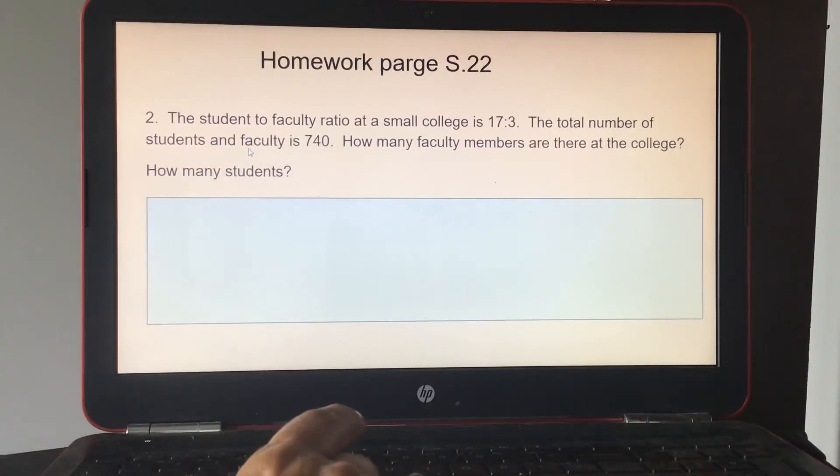Number two is page 22. The student-to-faculty ratio at a small college is 17 to 3. The total number of students and faculty is 740. How many faculty members are there at the college? How many students? So again, you're going to add these two, divide it into 740. And then that will be your unit. Whatever number that is, you're going to multiply 17 by to get the students' total. And then whatever you get when you divide it, you're going to take that number and multiply it by 3 to get your number of faculty because that's what they asked you for.